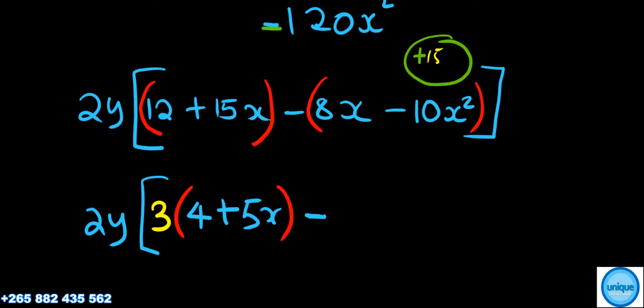And the common factor in the second bracket should be 2x. 2x divides 8x to get 4. A negative number divided by a negative number is positive, so 2x divides 10x squared to get 5x. Then close this one.